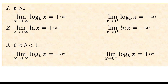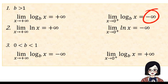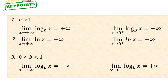To summarize: when b is greater than 1, the limit of log base b of x as x approaches positive infinity is positive infinity, whereas the limit as x approaches 0 from the right is negative infinity. These properties also apply to ln x. When b is greater than 0 but less than 1, the limit of log base b of x as x approaches positive infinity is negative infinity, and the limit as x approaches 0 from the right is positive infinity.